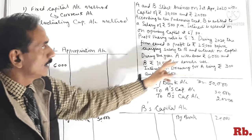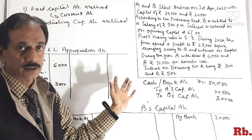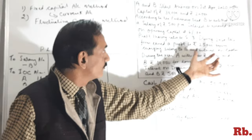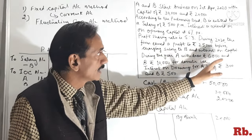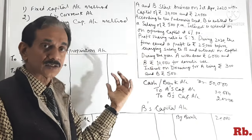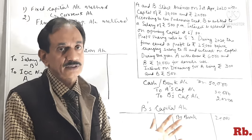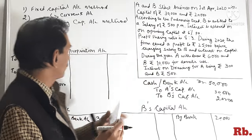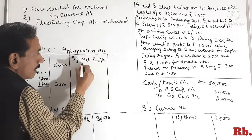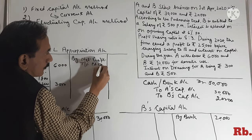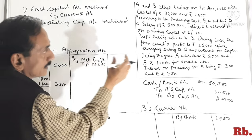Profit sharing ratio is 5:3 — 5 parts to A and 3 parts to B. During 2020, the firm earned a profit of Rs.25,000 before charging salary to B and interest on capital. Yahan par clear kar diya — before charging salary to B and interest on capital. So humein pehle ka hi profit chahiye. Humein net profit diya gaya hai Rs.25,000, hum yahan par likhenge: by net profit, transfer from P&L account — Rs.25,000.